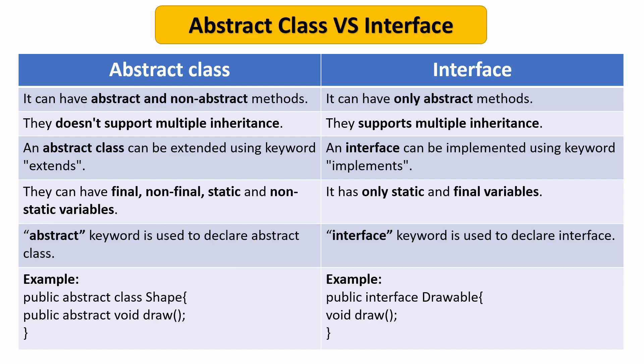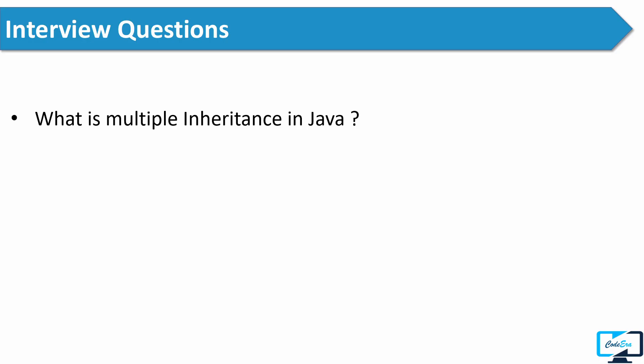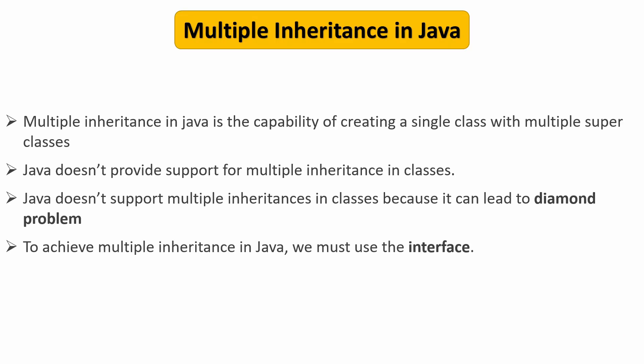After this, the interviewer asked him what is multiple inheritance in Java. You can say multiple inheritance in Java is the capability of creating a single class with multiple super classes. But Java doesn't support multiple inheritance in classes because it can lead to the diamond problem. To achieve multiple inheritance in Java, we must use interfaces.